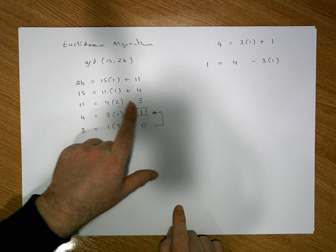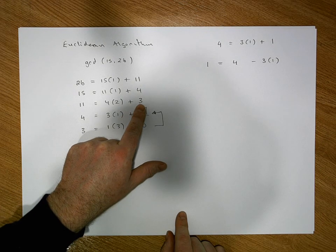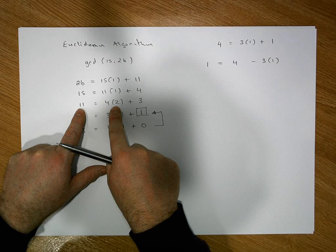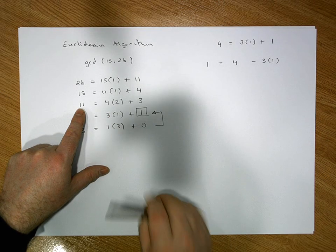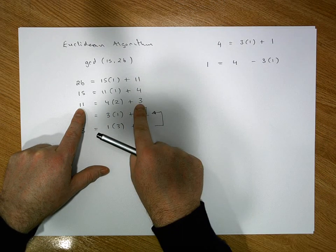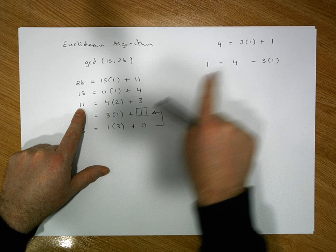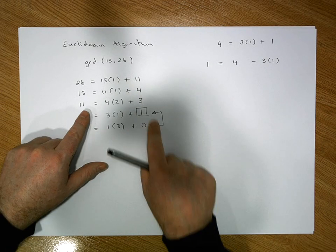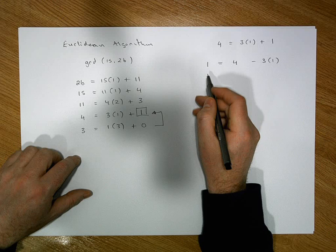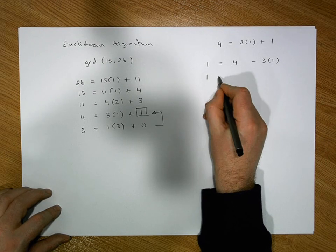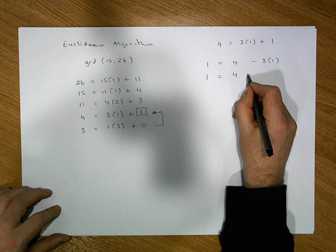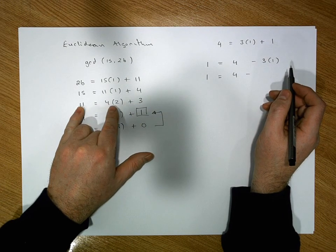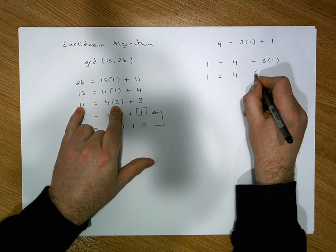Substituting in, we now know that 1 equals 4 minus (11 minus 4 times 2) times 1, continuing the back-substitution process working upward through the algorithm to express 1 as a linear combination of 15 and 26.